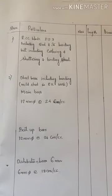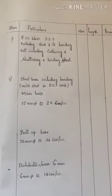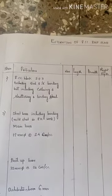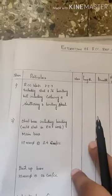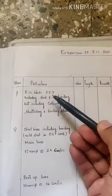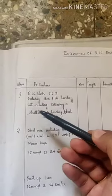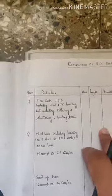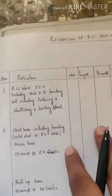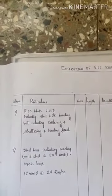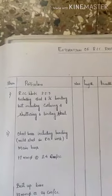Moving to the calculation part, first prepare a table. The first quantity to calculate is shuttering. Shuttering is the formwork provided in terms of plywood which forms the exact shape of any particular RCC member — they use plywood before pouring the concrete. The specification given is 1:2:3, excluding steel and its bending but including centering and shuttering and binding steel.